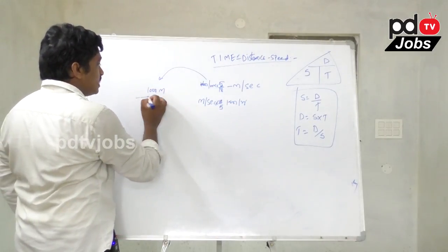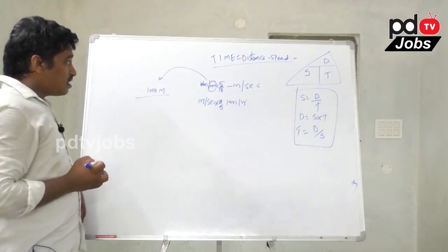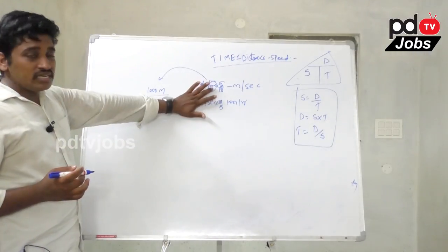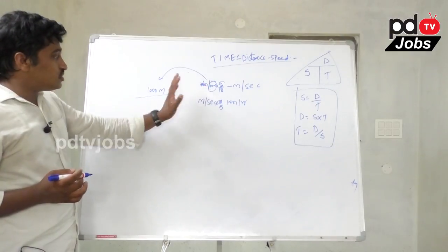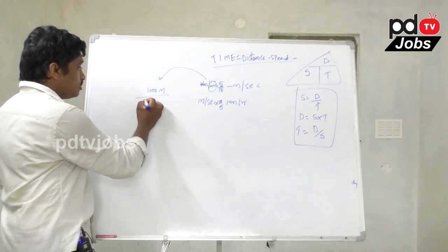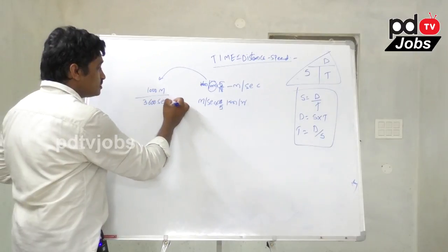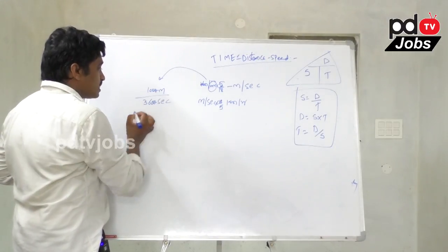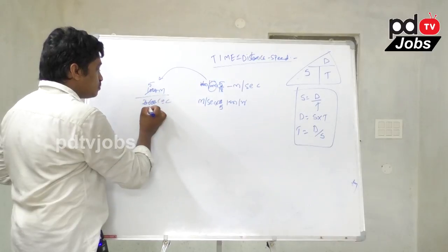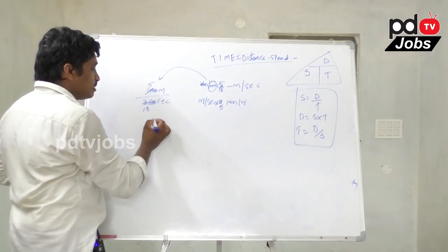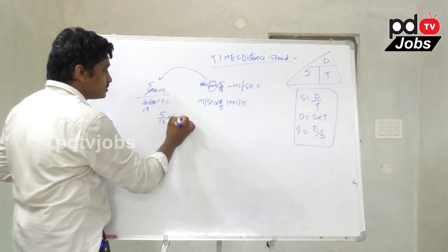1 kilometer is 1000 meters. 1 hour is 60 minutes, and 60 minutes is 60 into 60, which is 3600 seconds. Two zeros cancel out, leaving 5 by 18. That is why km per hour to m per second conversion uses 5 by 18, giving us the factor of 5 by 18 meters per second.